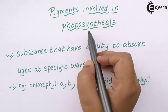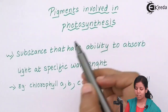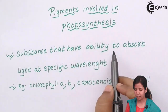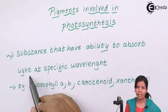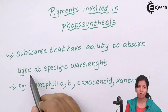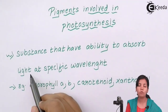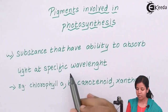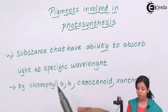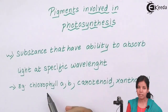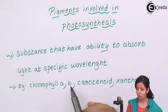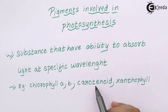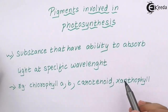Pigments involved in photosynthesis — pigments are substances that have an ability to absorb light, meaning the sun's energy in the form of photons. Photosynthesis never uses the UV range; it always uses the visible range, starting from around 460 nanometers. The photosynthetic pigments are chlorophyll A, chlorophyll B, carotenoids, and xanthophyll.